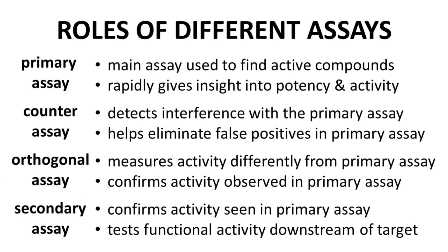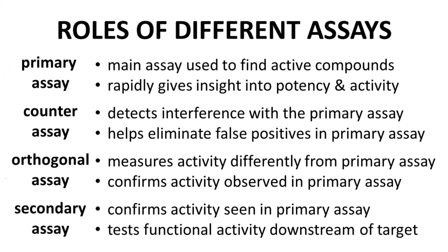Let's now discuss four different assay types classified based on the role of each in early discovery. First, we have the primary assay. The primary assay is the main testing tool to discover active molecules, and is often a relatively fast functional assay. Next, we have the counter assay. A counter assay identifies whether a molecule interferes with the proper function of the primary assay — these interfering molecules might be false positives.